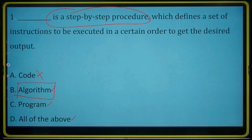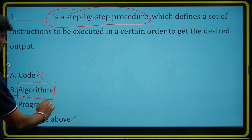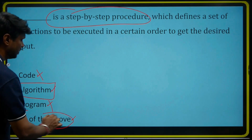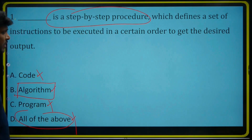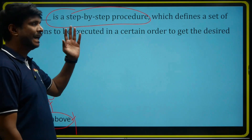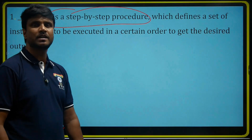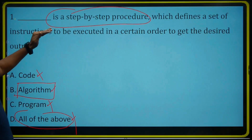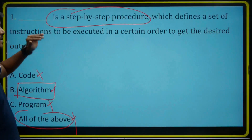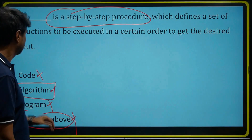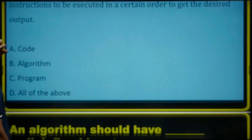It is not code. What is a program? The program is not a step-by-step procedure. And all of the above is also wrong. The correct answer for this is algorithm, because in simple words, algorithm is a step-by-step procedure.